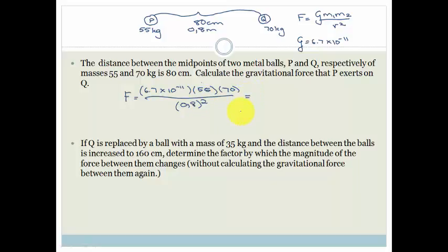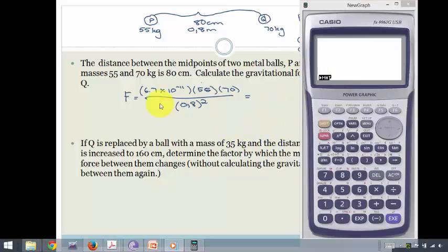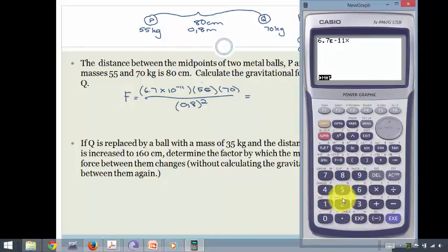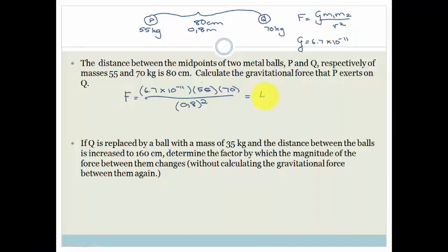So many of my students do it, and it's just tragic. Right, so let's get out our calculator. So now, let's see what we've got. We've got 6.7 exponent negative 11, times 55, times 70, equals, divided by 0.8 all squared. And we get 4.03 times by 10 to the negative 7, and that would be newtons.